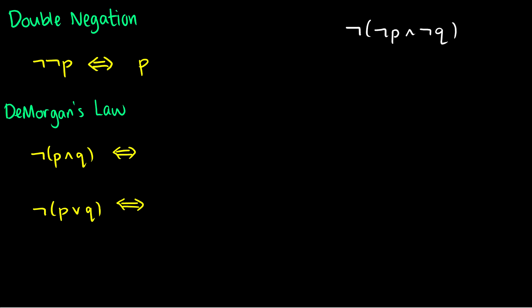The second law is De Morgan's law — we proved one of these using a truth table last time. ¬(P∧Q) is the same as ¬P∨¬Q, and ¬(P∨Q) is the same as ¬P∧¬Q. A good way to remember this: if you have a negation outside brackets, distribute the negation sign to each statement inside and flip the connective. So ¬(P∧Q) gives ¬P and ¬Q with the and flipped to or, and ¬(P∨Q) gives ¬P and ¬Q with the or flipped to and.